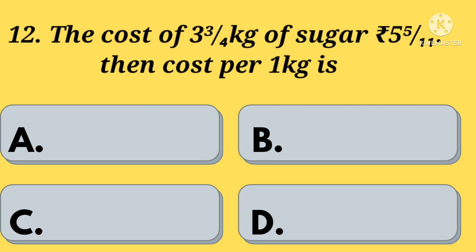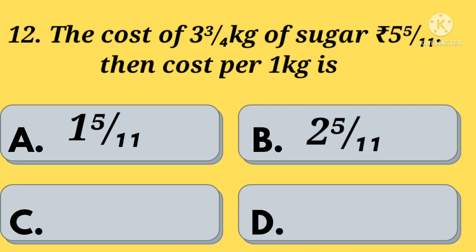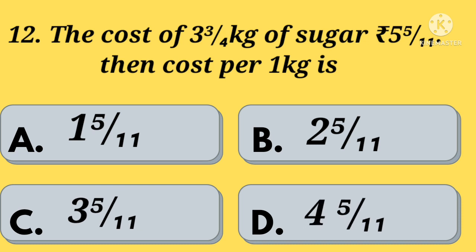The cost of 3 and 3 by 4 kg of sugar is 5 and 5 by 11. Then the cost per kg is — Option A: 1 and 5 by 11. Option B: 2 and 5 by 11. Option C: 3 and 5 by 11. Option D: 4 and 5 by 11. Your time starts now.